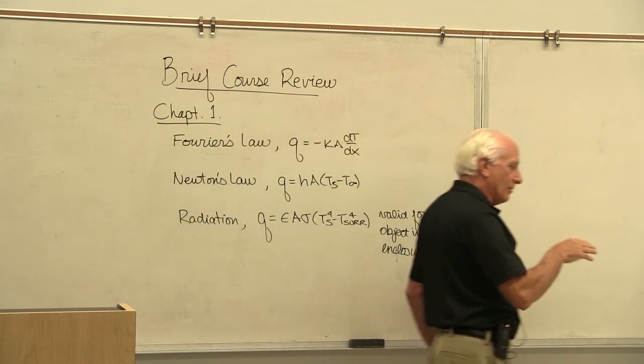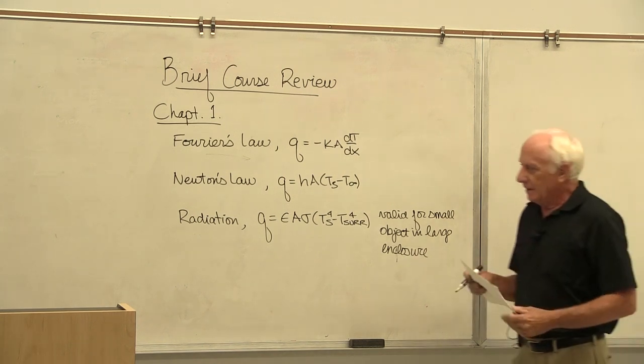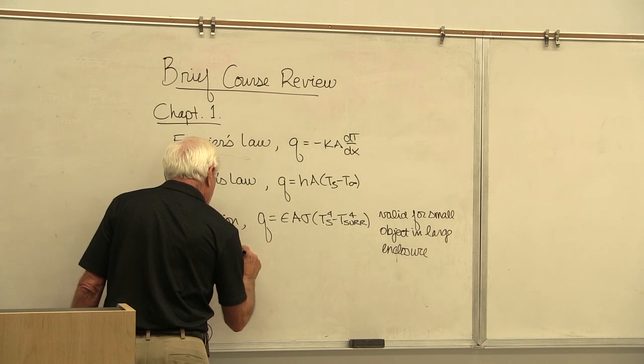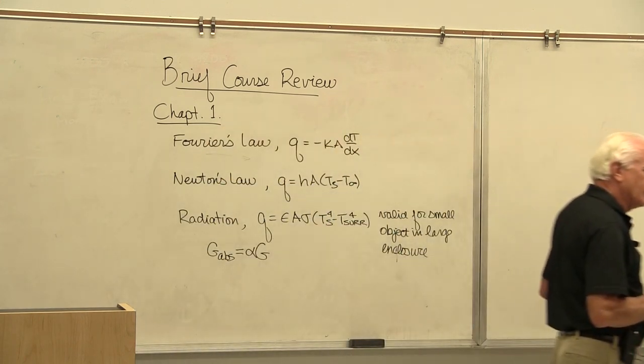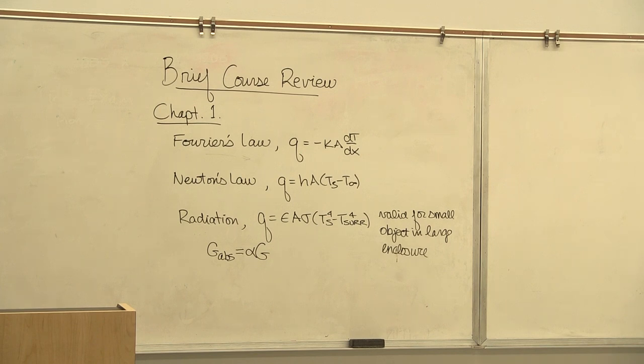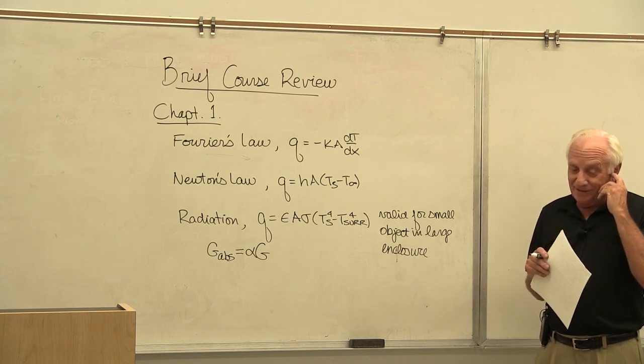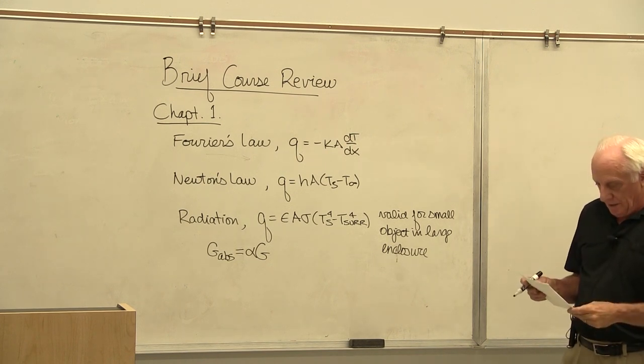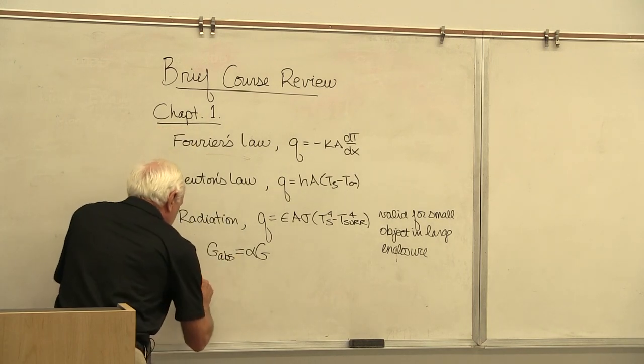We said this is only valid for a small object in a large enclosure, and then later on in Chapter 13 we proved it. So we waited until Chapter 13 to prove that statement. In Chapter 1 we just said believe it right now, but only use it in these conditions. There was also an equation in there which said G absorbed, the incident radiation, was alpha times G. So we use that in a problem for homework to absorb radiation. This is the absorptivity times the irradiation. G is called the irradiation; it's also the incident radiation. That's the only term they talked about in Chapter 1. They didn't mention the term radiosity or emissive power, capital E, capital J. They only mentioned capital G in Chapter 1.